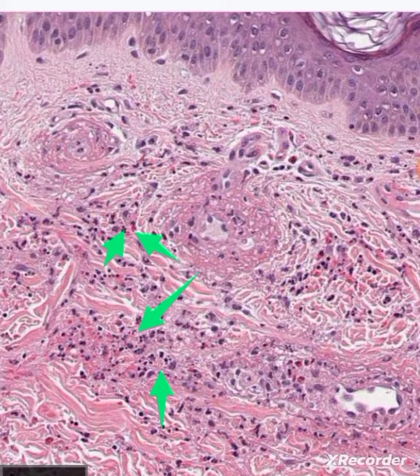So the fibrinoid necrosis or fibrinoid degeneration of the blood vessel wall, leukocytoclasia, and karyorrhexis or nuclear dust — these are all the characteristics of leukocytoclastic vasculitis. Thank you.